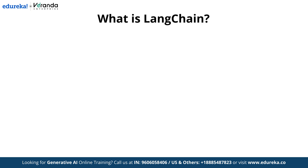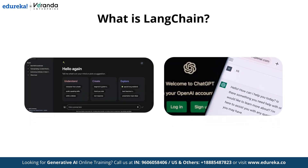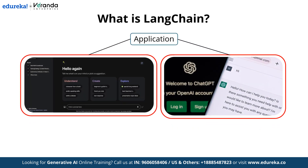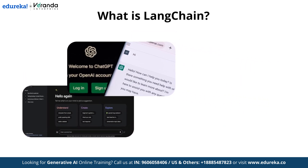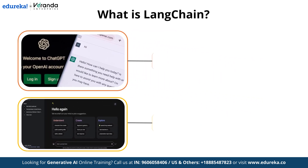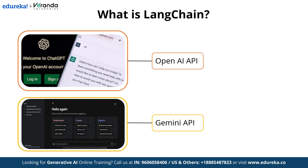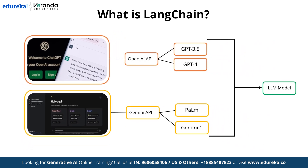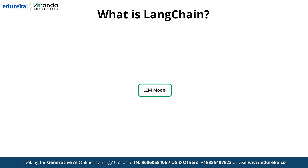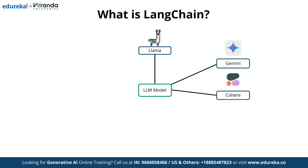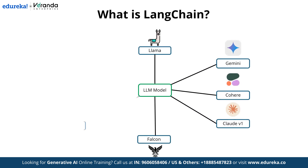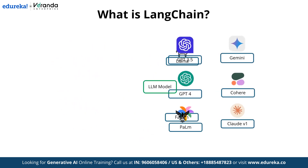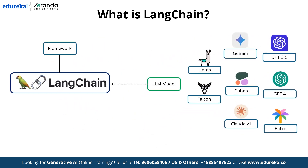Let us understand what Langchain is and why it is a valuable tool for building AI applications. You must be aware of popular applications such as GPT and Gemini. These applications utilize APIs — GPT uses OpenAI's API while Gemini operates through the Gemini API. To process prompts, they leverage models like GPT-3.5, GPT-4, PALM, and Gemini. Additionally, there are other advanced models such as LLAMA, Gemini, Cohere, Claude version 1, Falcon, and GPT-4. Langchain is a framework designed to help developers build flexible and powerful AI-driven applications by integrating and utilizing these diverse models effectively.